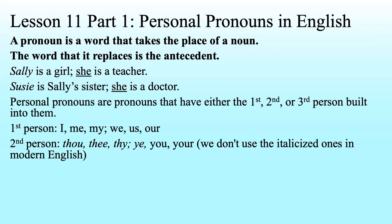Thou, thee, and thy are all singular second person — when there's just one person you're talking to. Ye, you, and your are all plural second person — when you're talking to a group of people. That's not a distinction we make anymore in modern English; we just use 'you' or 'your' regardless of whether it's one person or many. Though we can make a distinction — we can say y'all, or you guys, or you-ins in some parts of the country. But normally we don't really care about the distinction. These are what the Old English pronouns are.